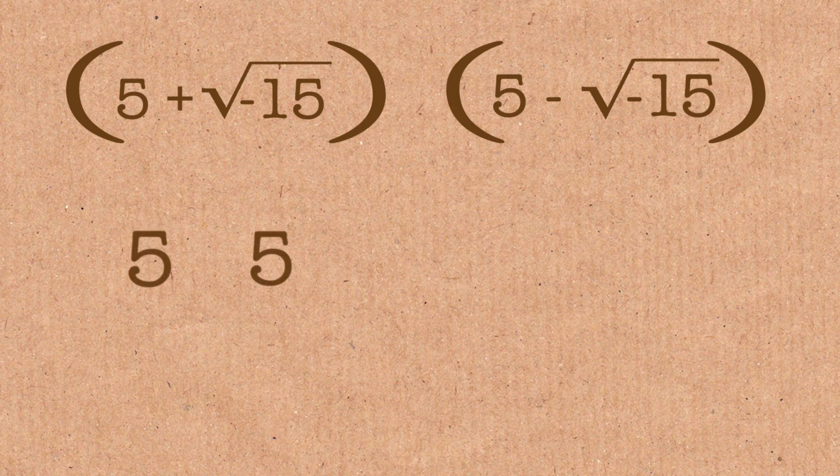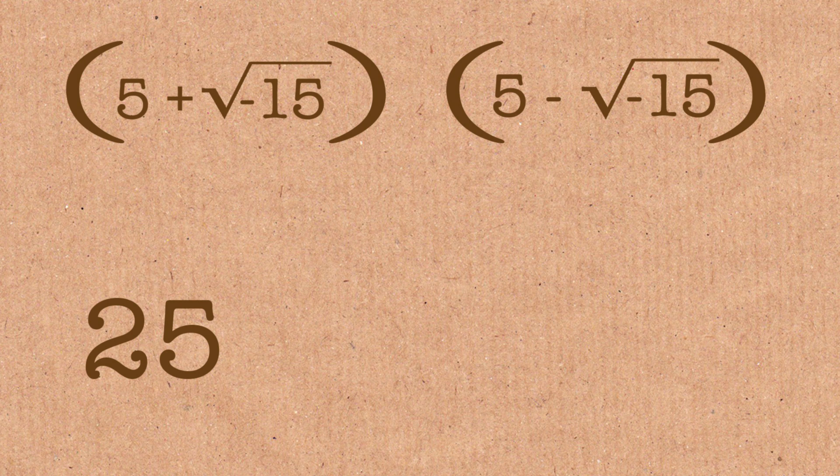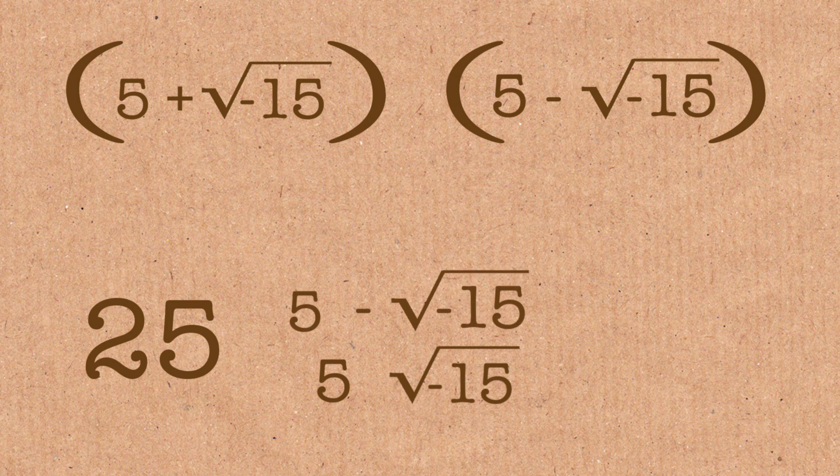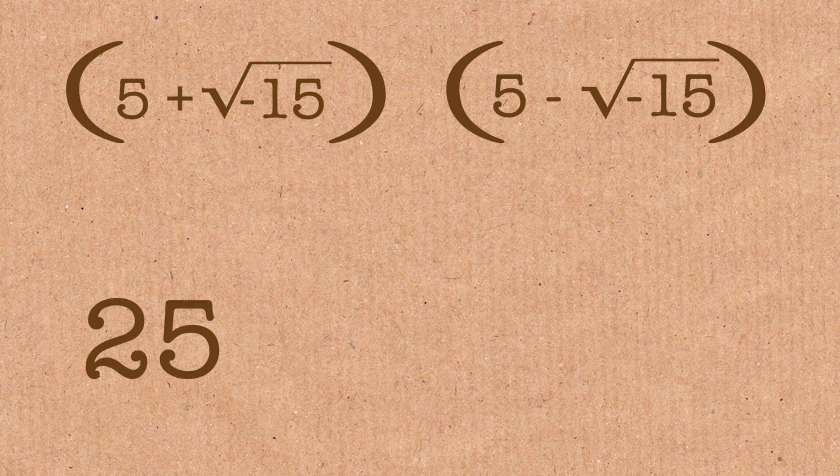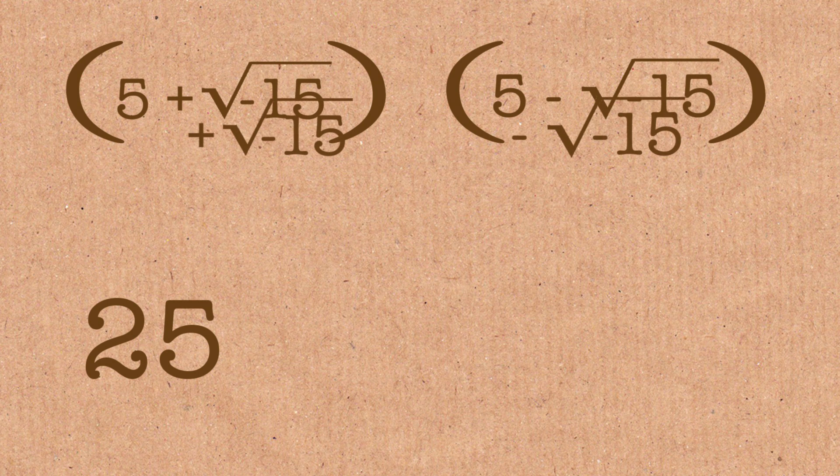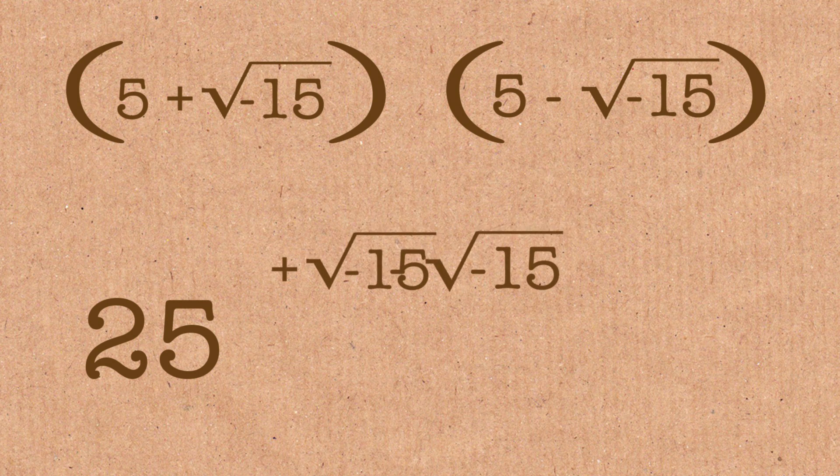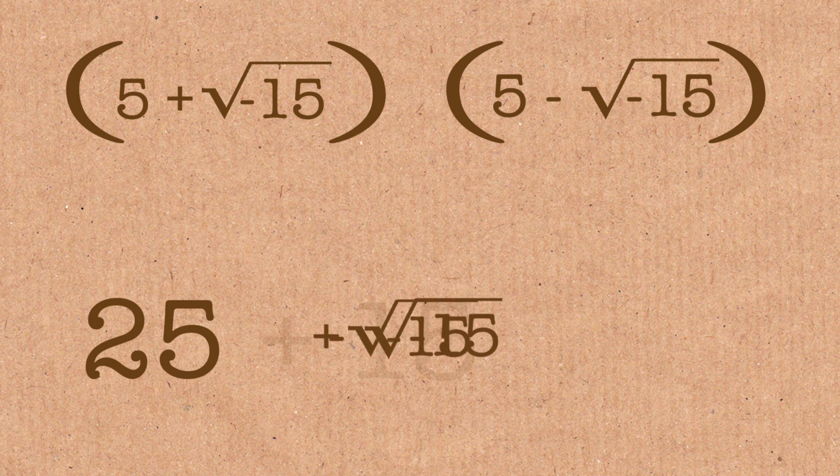Well, the 5 times 5 is a 25. The square root of minus 15 times the 5 cancels the minus square root of minus 15 times the 5. The fourth term in these cross terms that you have to consider is the square root of minus 15 times minus the square root of minus 15, which, if you work it out, is 15. And so you get 25 plus 15 equals 40.